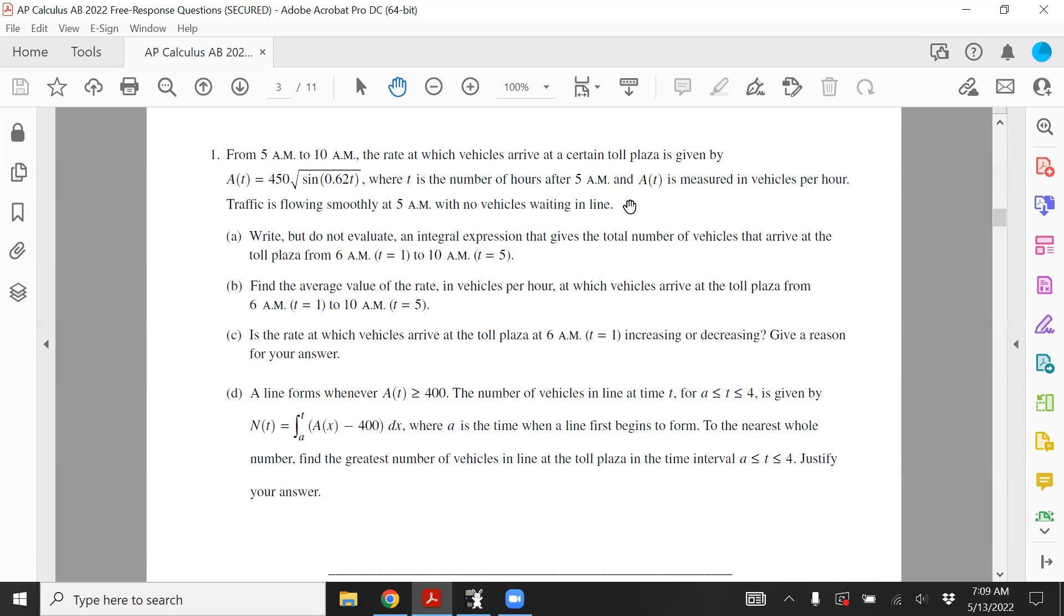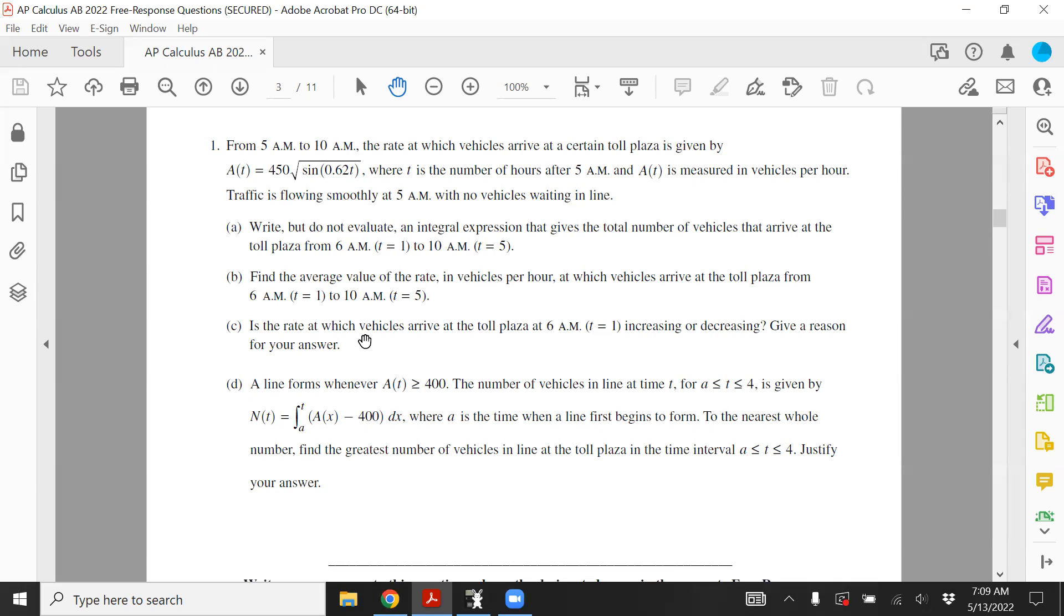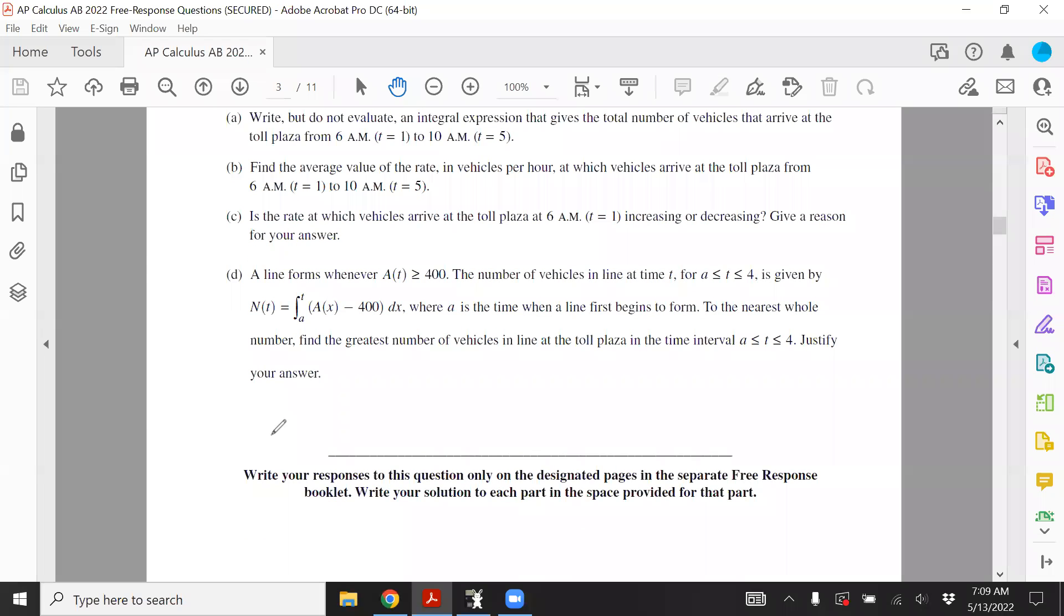Part A is asking to write the value of an integral expression that gives the total number of vehicles that arrive at a toll plaza from 6 a.m., which is T equals 1, and 10 a.m., which is 5 hours after 5 a.m. So part A should be pretty straightforward. All you're going to do is just say that the integral from 1 to 5, and then the expression 450 times square root sine 0.62T, and don't forget about the dT at the end. So that's part A.